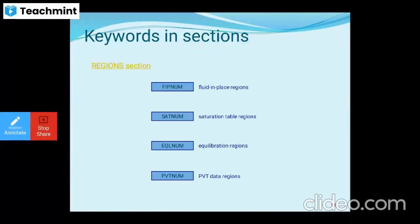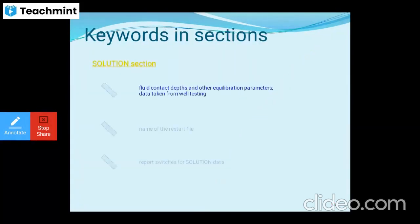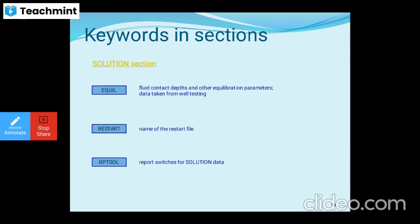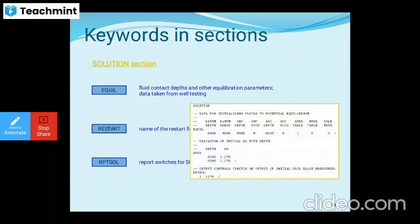Keywords in the REGIONS section include FIPNUM for fluids in place regions, SATNUM for saturation regions, EQLNUM for equilibrium regions, and PVTNUM for PVT data regions. The SOLUTION section uses EQUIL for fluid contact depths and equilibrium parameters taken from well testing, the name of the restart file, and RPTSOL for report switches for solution data — initializing fluids to potential equilibrium.